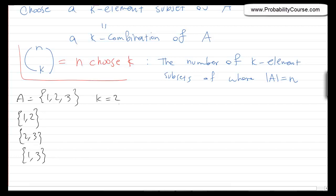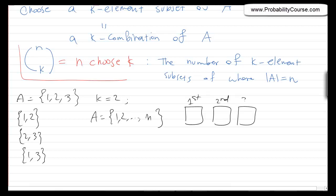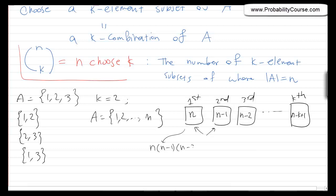So how do we solve it in the general case? I have a set A with n elements. For the time being, let's assume that ordering matters. If ordering matters, we know how to solve this. I'm going to choose k elements: the first, the second, the third, and the kth one. For the first one, I have n options. For the second one, I have n minus 1 options, because I cannot choose the first element. For the third one, I have n minus 2, and so on. The last one gives n minus k plus 1 options. So this is n times (n minus 1) times (n minus 2) and so on, which we can rewrite as n factorial divided by (n minus k) factorial. This is actually P(n, k), the number of k permutations of the set A.